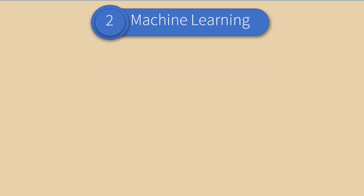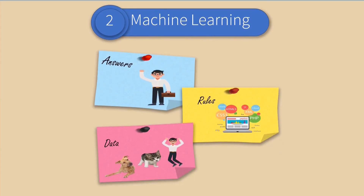If you look at machine learning, machine learning flips the parameters of conventional programming. As you can see here, answers and data go into the system, and rules come out from the system.